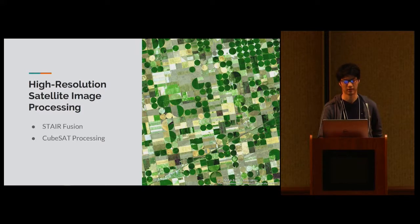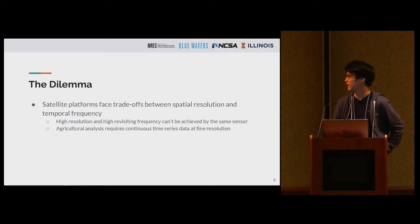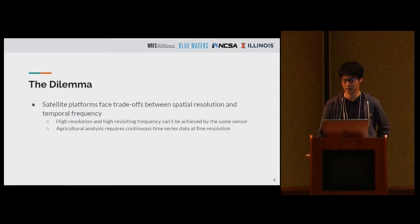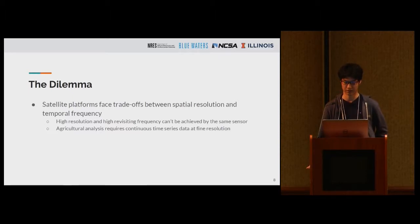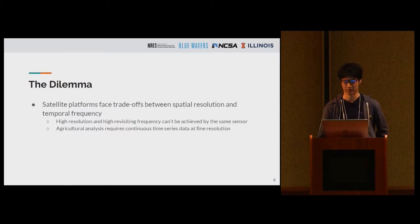In high-resolution satellite image processing, we face a dilemma: it's impossible to have both high spatial resolution and high temporal resolution simultaneously. It's not realistic for a single platform to have both fine resolution and high revisiting frequency. Unfortunately, that's what we need for agricultural analysis, because we need a continuous time series and ideally want to look at each individual field.